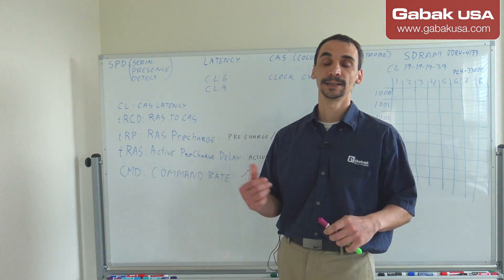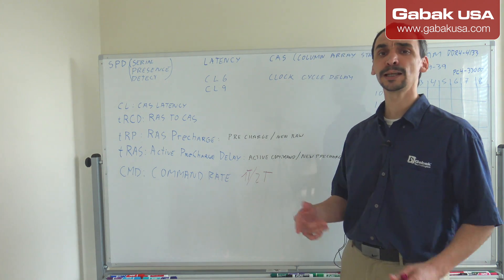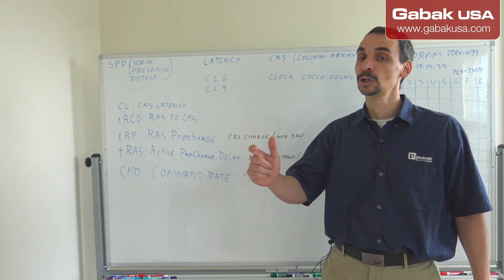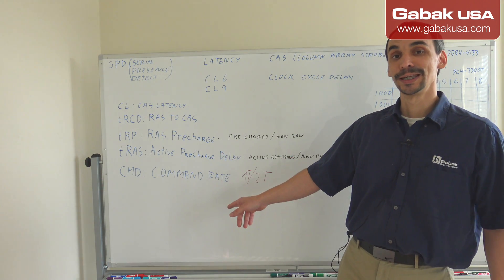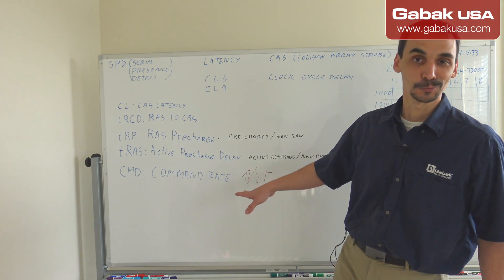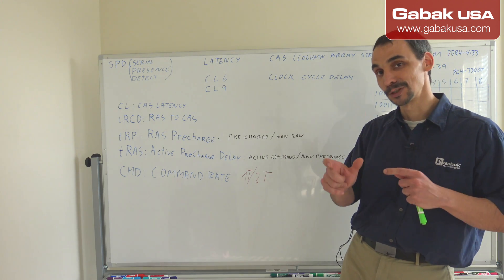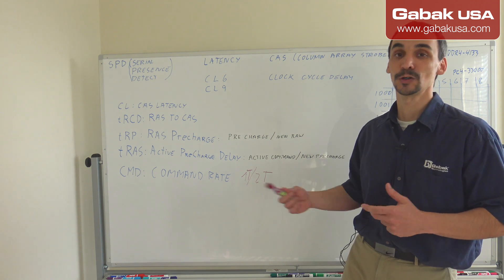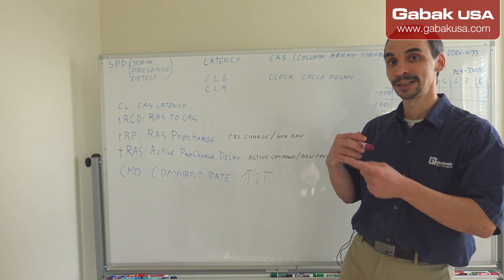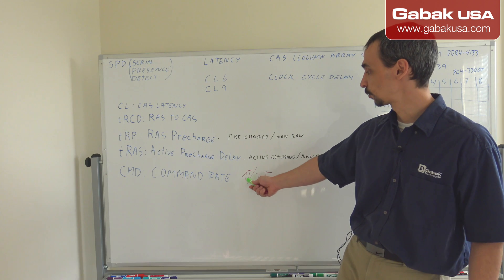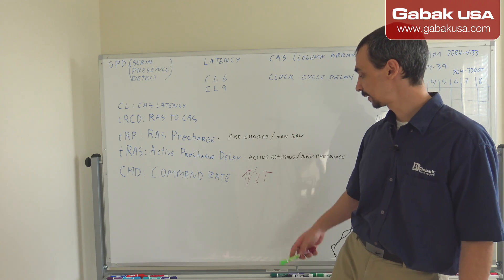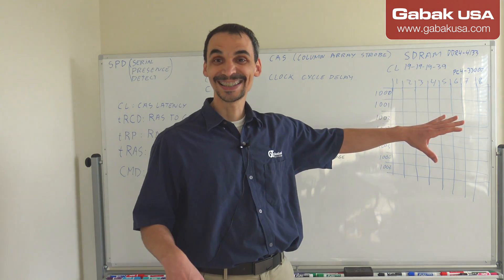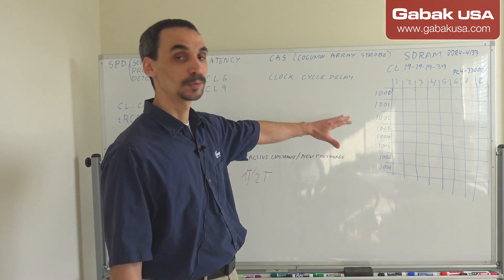Finally, CR is the Command Rate — T1 or T2 as I mentioned before. The number represents the time between the memory controller sending a command to the RAM module. That is basically what Command Rate means.